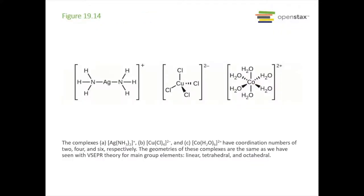Here are some complexes. In A, the silver with two ammonias has a coordination number of two; each NH3 is monodentate, attached by only one atom. In B, the copper chloride complex has all monodentate ligands, giving copper a coordination number of four. The cobalt complex has a coordination number of six. Their geometries: the silver complex is linear, copper is tetrahedral, and cobalt is octahedral.